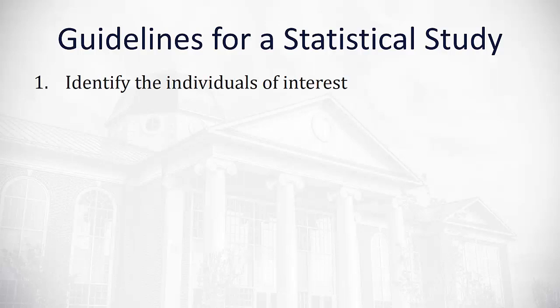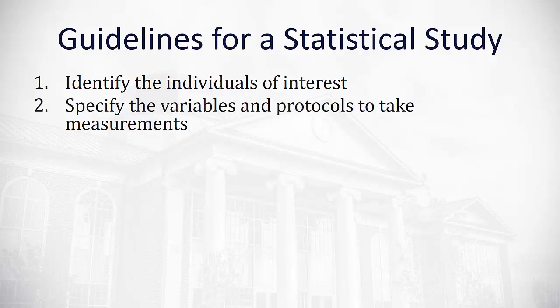First, you need to identify what individuals you're interested in studying — who is your population? Once you've done that, you need to clearly specify the variables and the protocols you're going to take to get those measurements. What is your random sampling technique? How are you going to set up the study to make sure you avoid bias and cover all the potential extraneous variables?